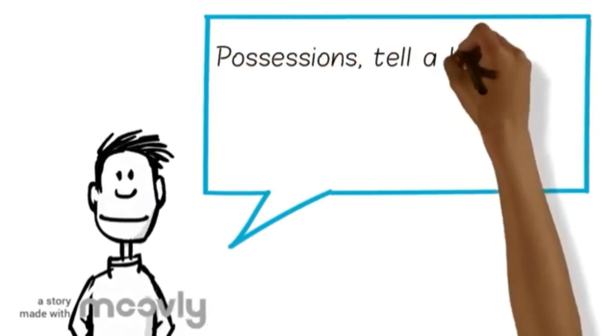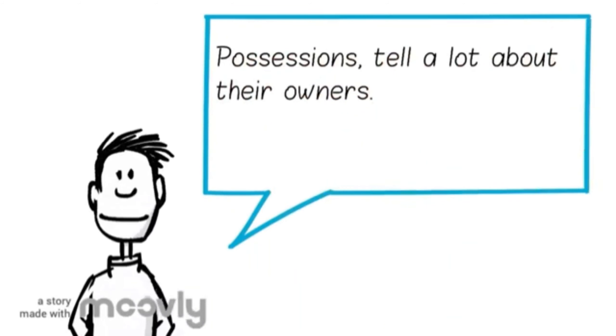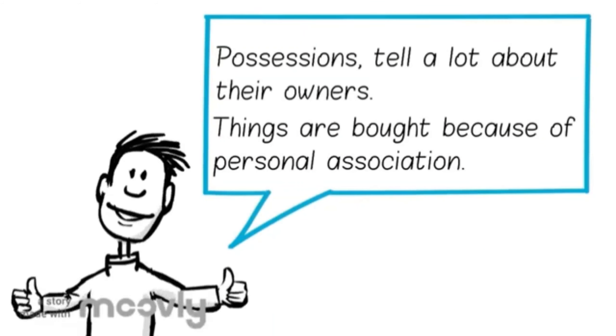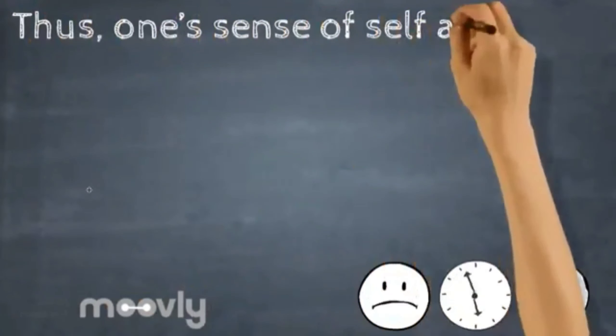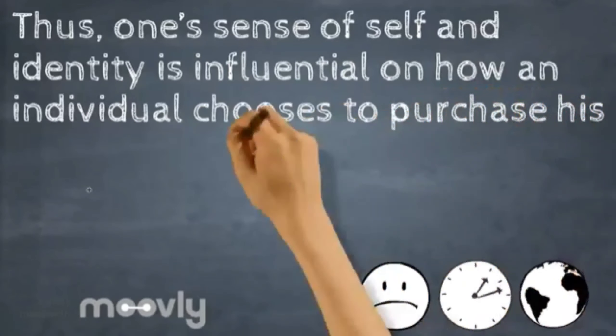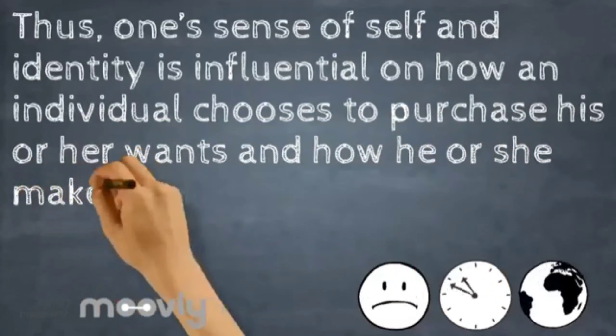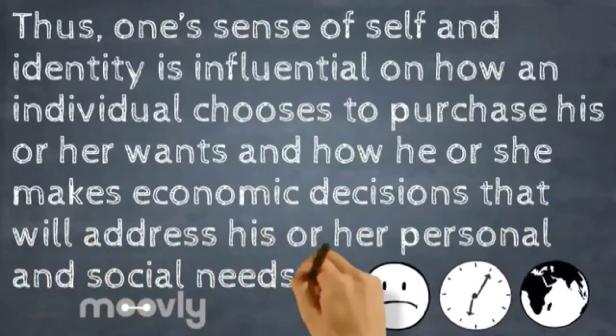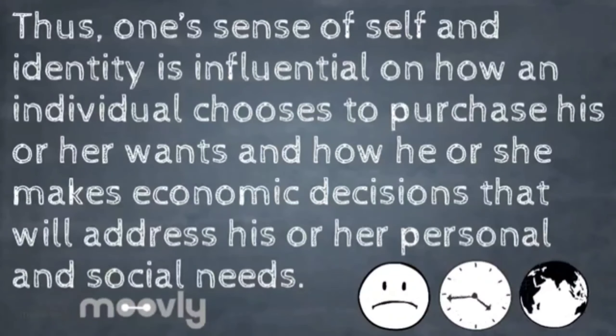Possessions tell a lot about their owners. Things are bought because of personal association. Thus, one's sense of self and identity is influential on how an individual chooses to purchase his or her wants and how he or she makes economic decisions that will address his or her personal and social needs.